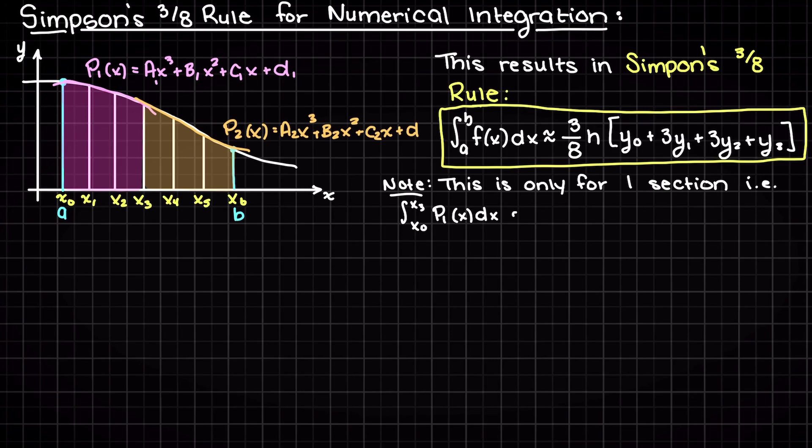After some algebra, this results in our Simpson's 3/8 rule. Just note that this is just for one integrated section with equal step sizes.